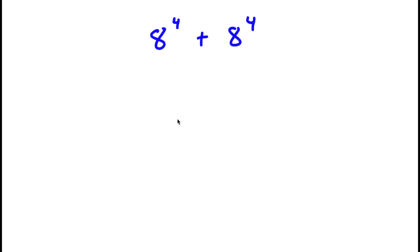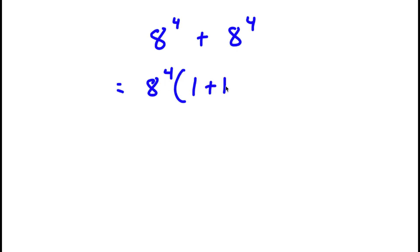In this problem, I have 8 to the power of 4 plus 8 to the power of 4. To solve this problem, I'm going to first start by factoring out 8 to the power of 4. So I have 8 to the power of 4 times — 8 to the power of 4 divided by 8 to the power of 4 is 1 — so I have 8 to the power of 4 times (1 plus 1), which gives 8 to the power of 4 times 2.